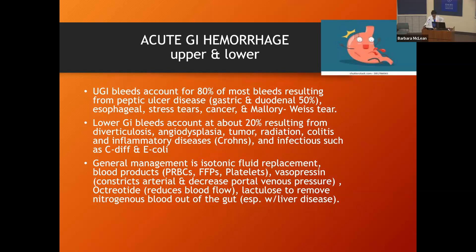Esophageal varices result from alcohol use going from the mouth all the way down into the stomach, and it can cause tears. One of the common tears is the Mallory-Weiss tear — you may see that on your test. Lower GI bleeds only account for about 20%, and they result from diverticulitis, radiation history, colitis, or some type of anti-inflammatory disease.